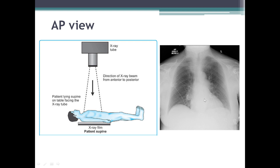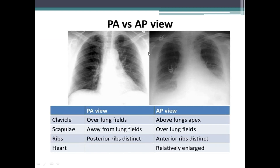The heart appears enlarged in AP view for two reasons: first, the distance between the heart and image receptor is greater; second, because of beam divergence. Differentiating points between PA and AP view: in PA view the clavicles overlie the lung fields, whereas in AP view the clavicles are above the lung apices. In PA view the scapulae are rotated away from the lung fields so the lung is better seen, while in AP view the scapulae overlie the lung fields and findings may be missed. Also, in PA view the posterior ribs are more distinct; in AP view the anterior ribs are more distinct. The heart will be more magnified in AP view, making it difficult to comment on heart size.